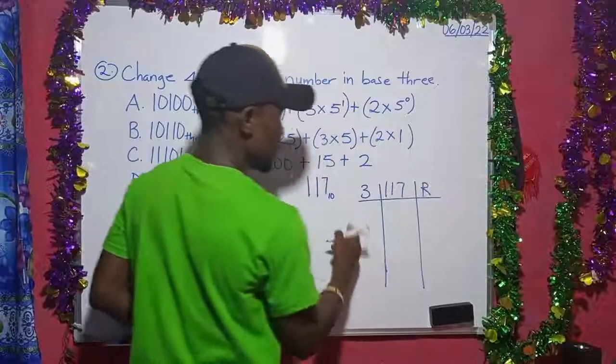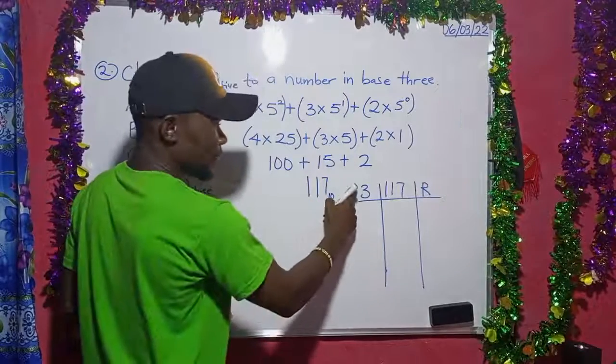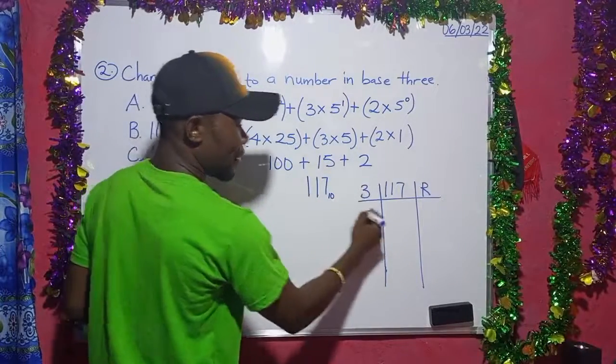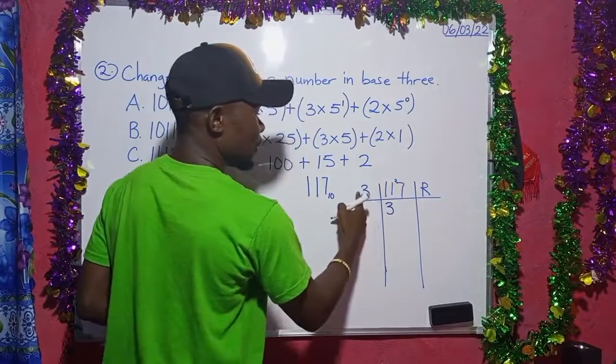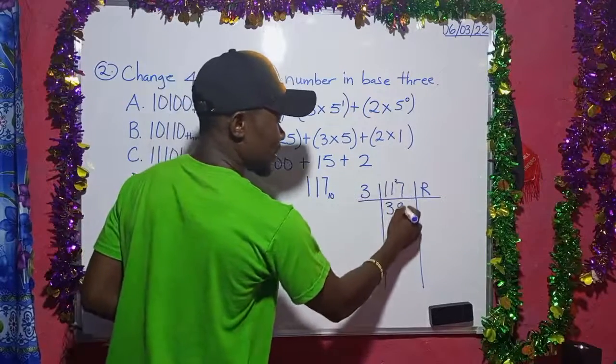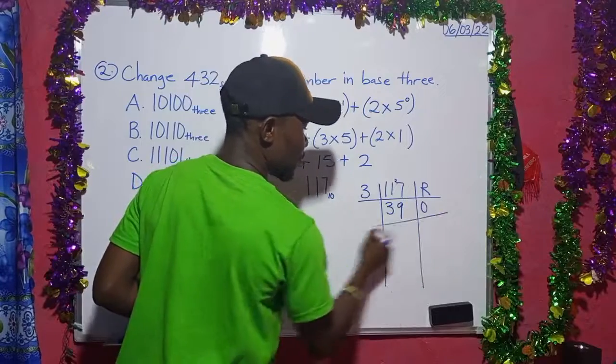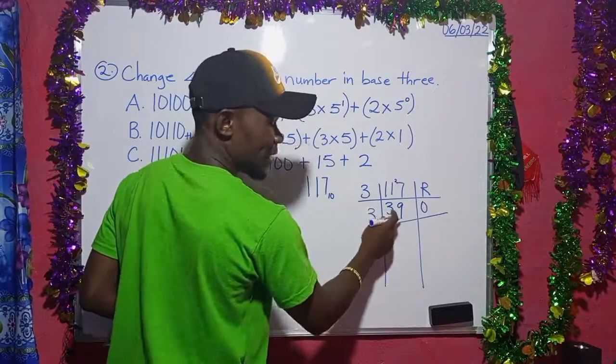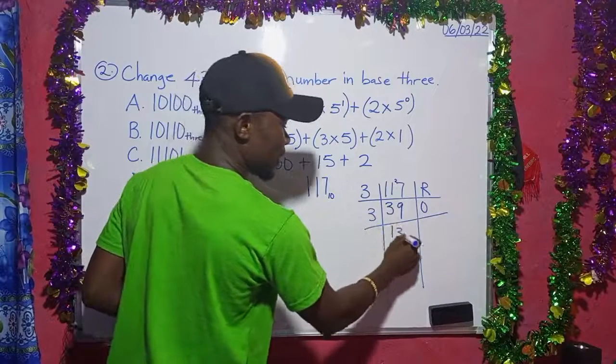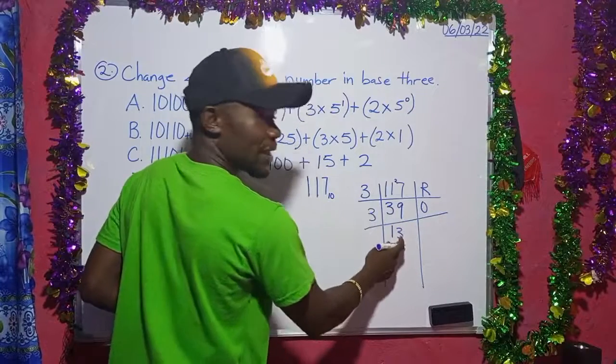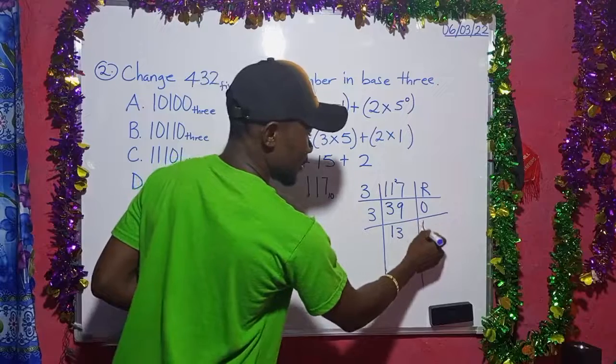117 divided by 3 gives us 39. 3 into 11 is 3 times, remainder 2. 3 into 27 is 9 times. We bring down 0. Again, 3 divide this. 3 into 39 is 13 times. 39 minus 39 is 0.